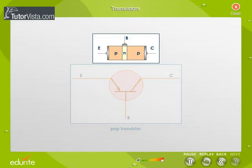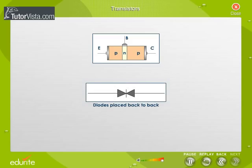We can consider the transistor as two diodes placed back to back.